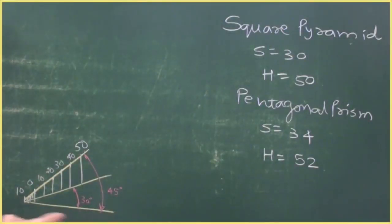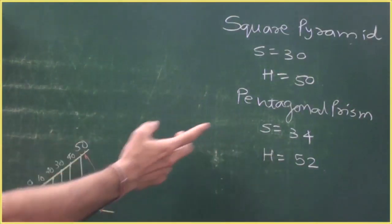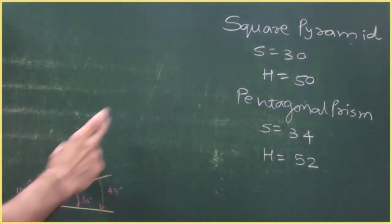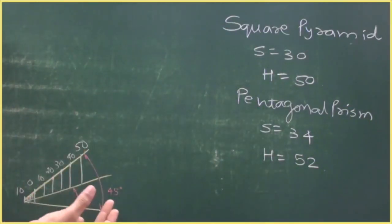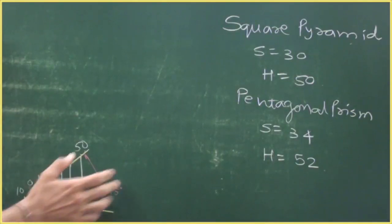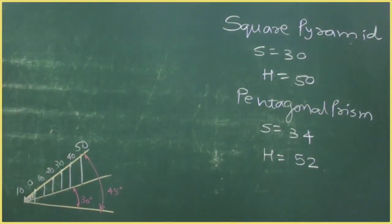We'll draw the isometric scale from 0 to 50 and 0 to 52. We can mark 50 from here, 2 from here, 50 directly, 30 directly, and 34 — take 30 from here and 4 from here. After drawing the isometric scale, we will start with the helping figures.